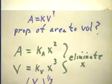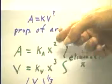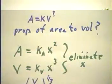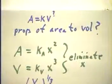We know that both of these have to be true. We don't know what k_A and k_V are, we don't care at this point. We're just trying to find what the nature of the proportionality is between area and volume.